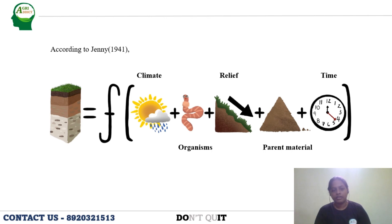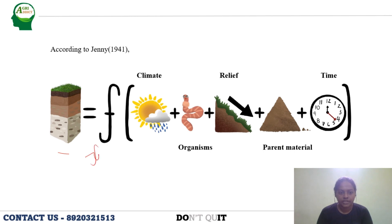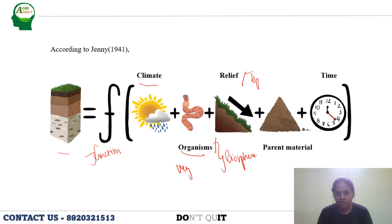According to Jenny in the year 1941, he gave five factors that are most important and influence the soil in different ways. These five factors include climate, organisms, relief, parent material, and time. Jenny stated that soil formation is a function of five factors: climate, organisms or vegetation collectively called biosphere, relief or topography, parent material, and time.